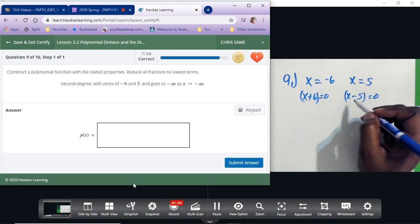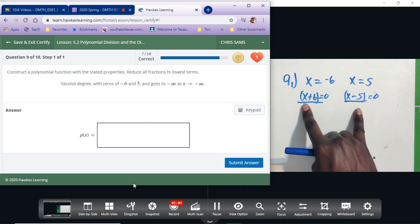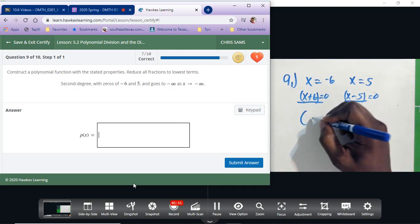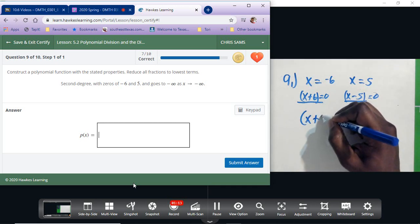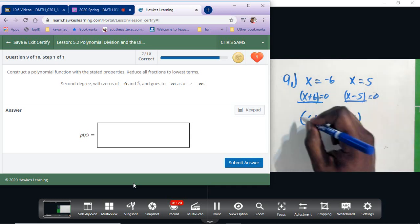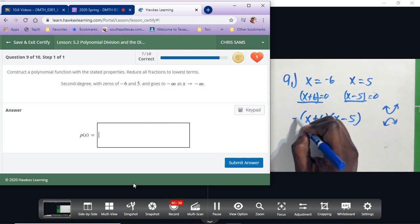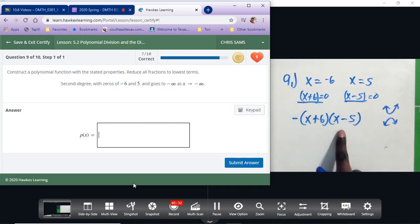These are your two factors. We're going to multiply those two together to get our polynomial, so x plus six times x minus five. And then normally this is positive, so when it's positive it goes up to positive infinity. The problem said we wanted to go to negative infinity, so we need to add a negative out front to change the sign so that our parabola opens down. And that should be all we need, so we'll FOIL that.